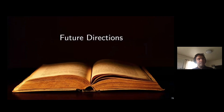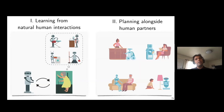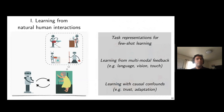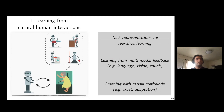Looking forward, I'm excited to start a lab at Cornell. For challenge one — how should robots learn tasks from natural human interactions — think of grandma unpacking a new robot apprentice for household tasks. Key questions: what are flexible task representations that can be learned quickly? How do we learn from multi-modal feedback like language, vision, or touch? How do we handle causal confounds like how much grandma trusts the robot or how she adapts to it?